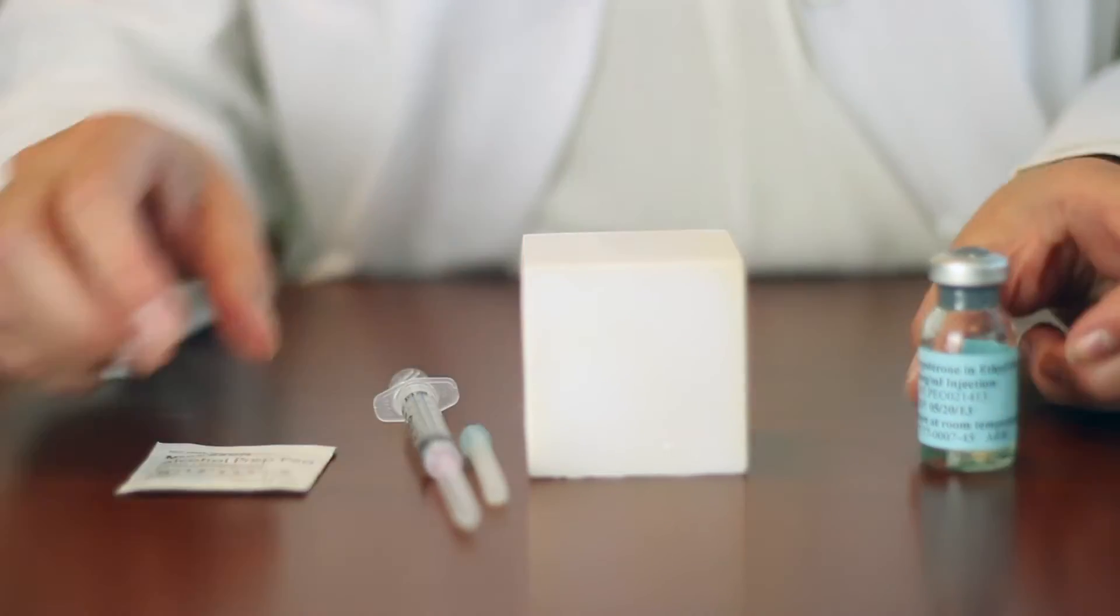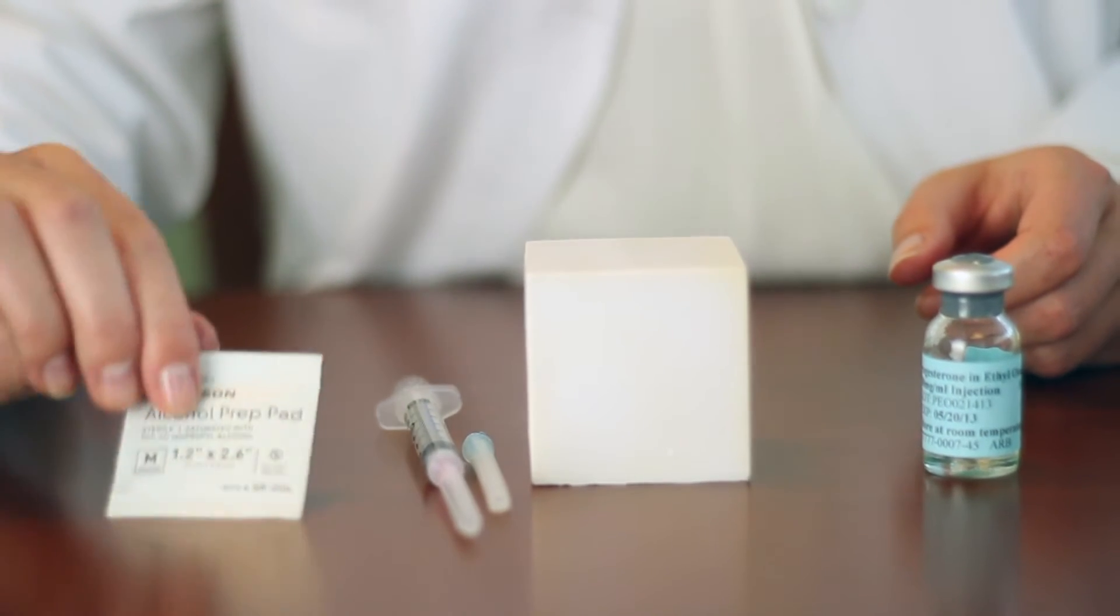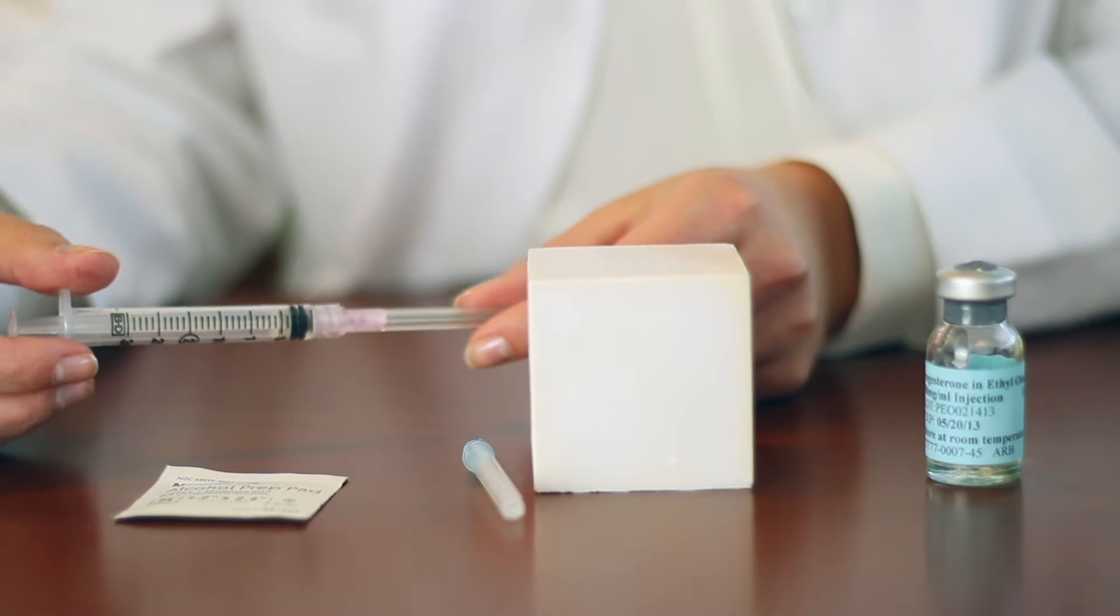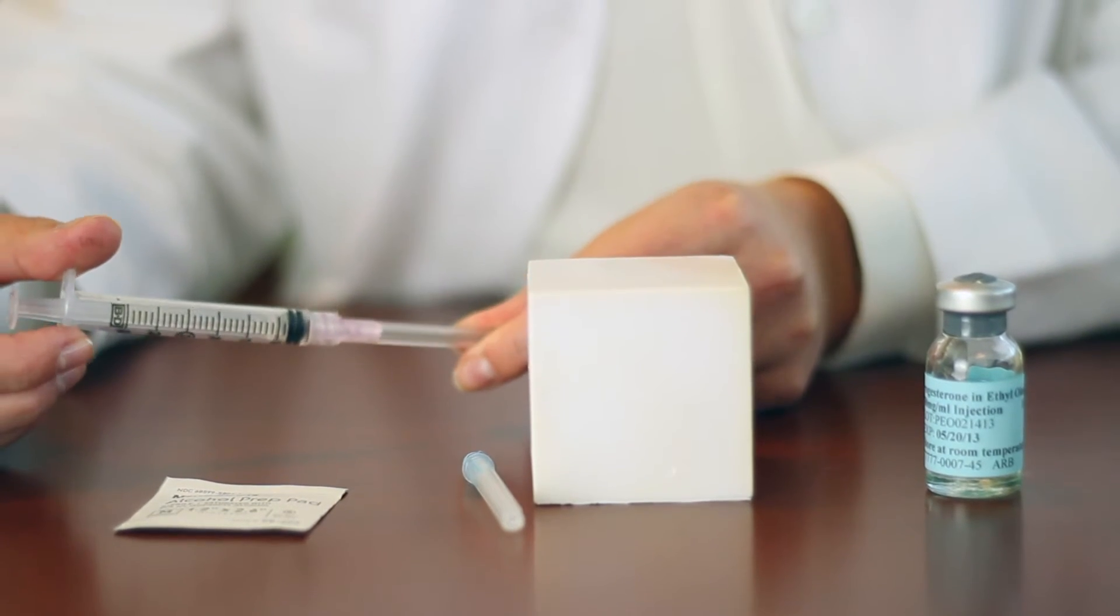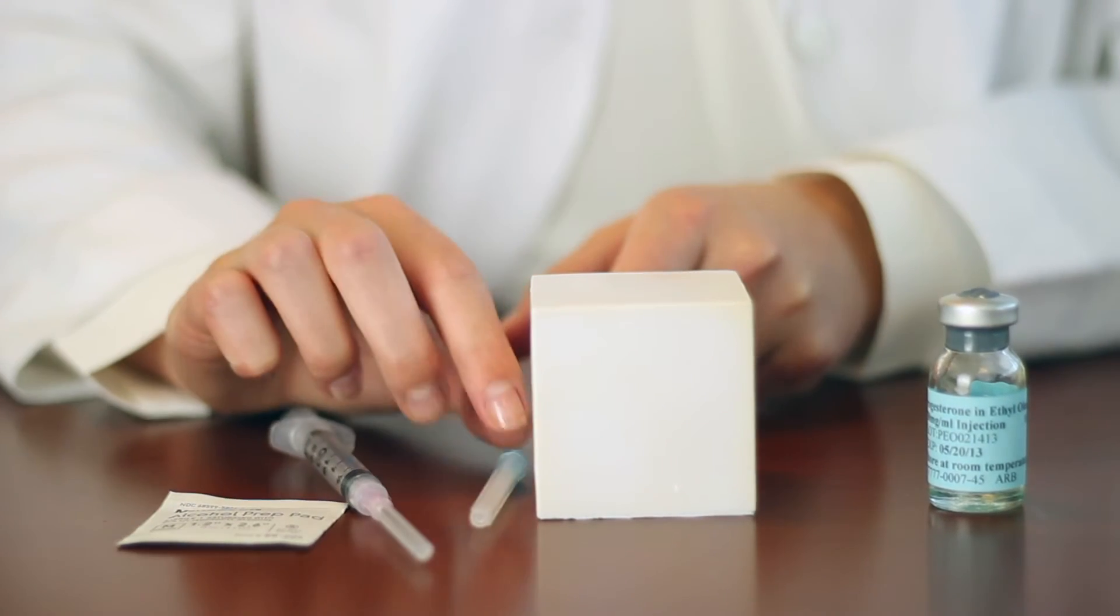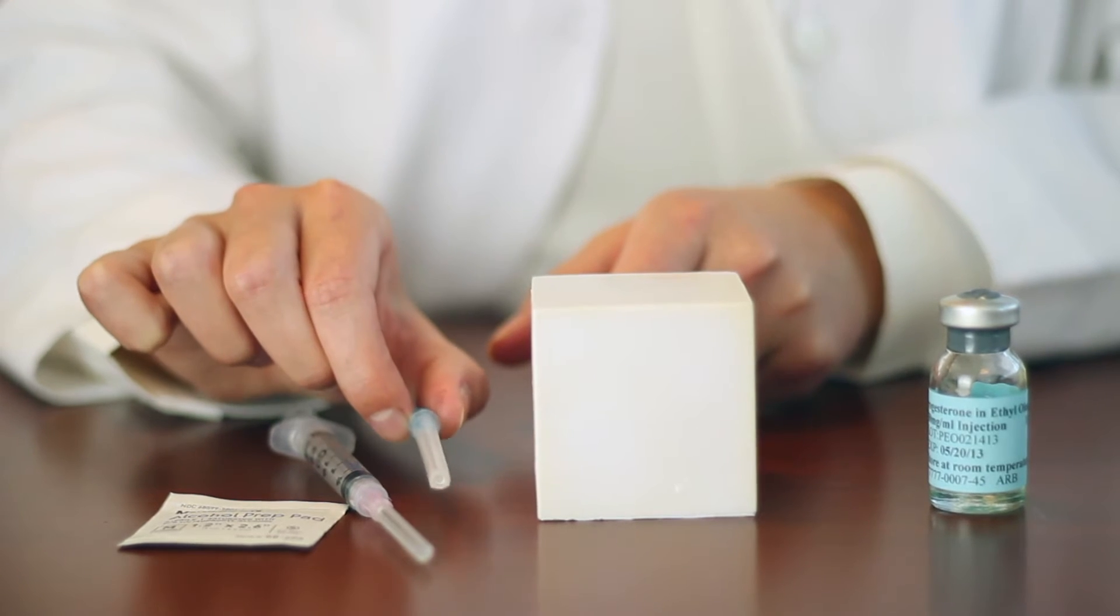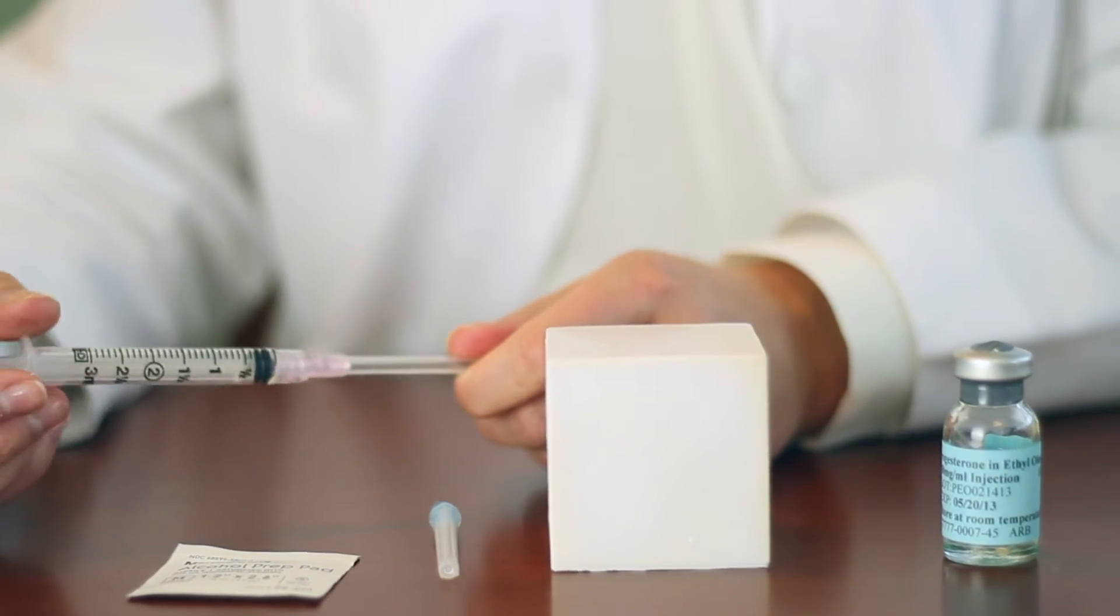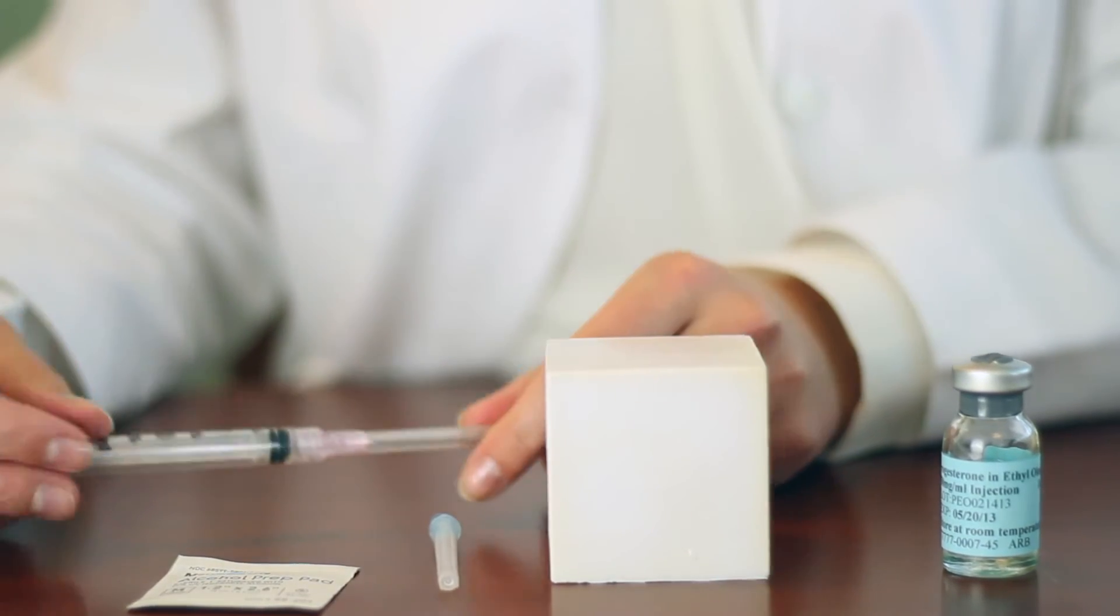You're going to want to have your vial, an alcohol swab, a 3 milliliter syringe with an 18 gauge needle, and your injecting needle, usually 22 or 25 gauge. You want to attach your 18 gauge needle to your 3 milliliter syringe.